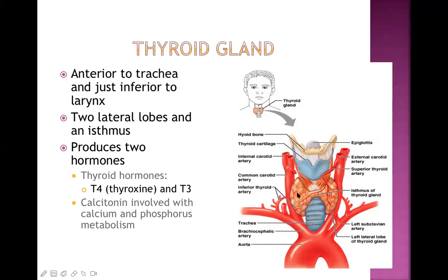Looking at the blood supply of the thyroid gland, it comes from many different sources. The superior thyroid artery comes from above and the inferior thyroid artery from below. It has a very rich blood supply, so any trauma or injury to the thyroid gland, or during surgery, it can bleed a lot.